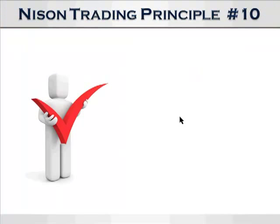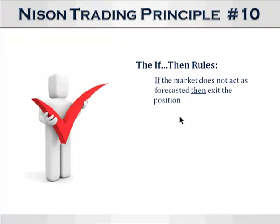Now let's look at the next aspect of the if-then scenario. This has to do with stops. If the market does not act as forecasted, then get out of the position. Whenever you do a trade, there should be a rationale for doing the trade. For those who have my new Reignited DVDs, we have a whole section on using a trading journal. One of the rules with the trading journal is you write down why you're doing the trade. If the trade outlook is not going as anticipated, then exit the trade.